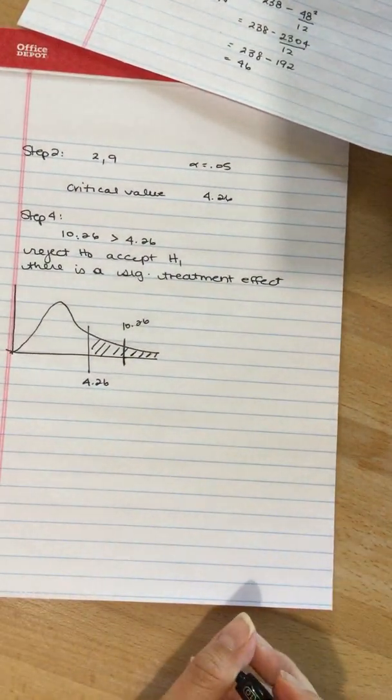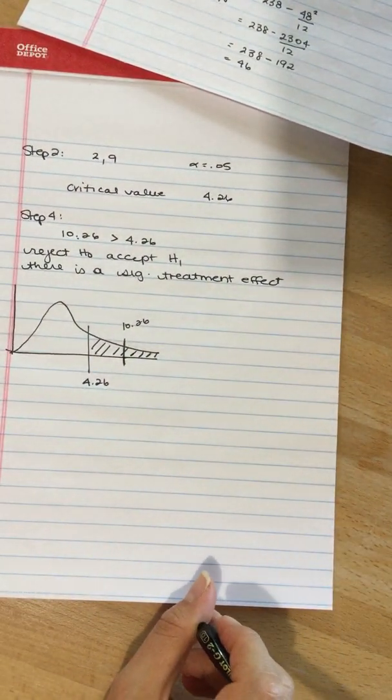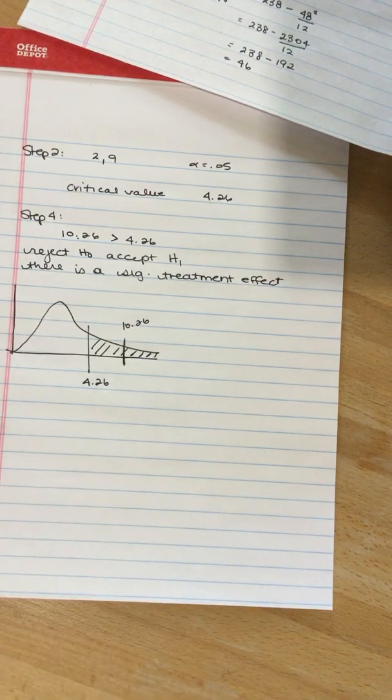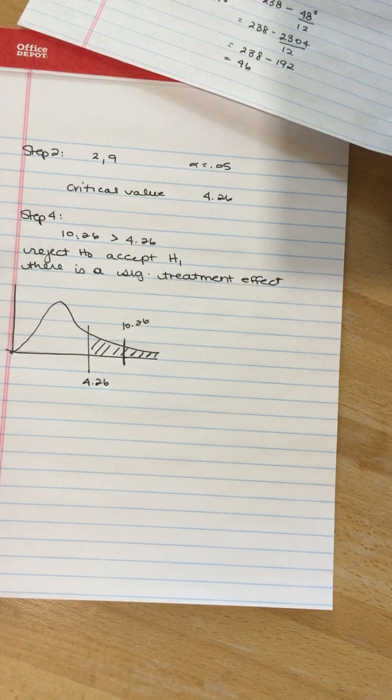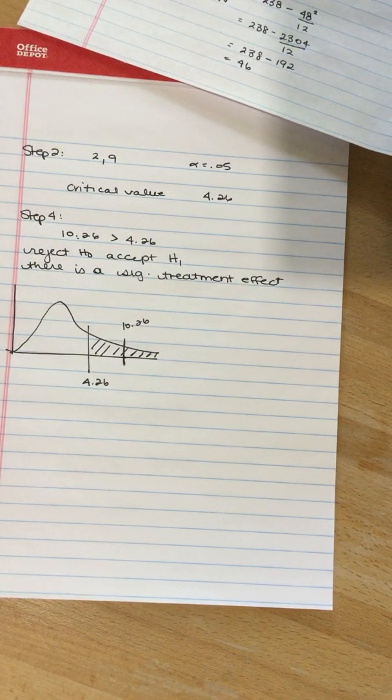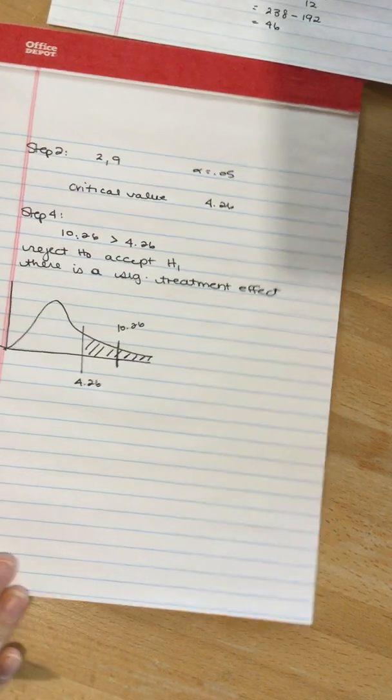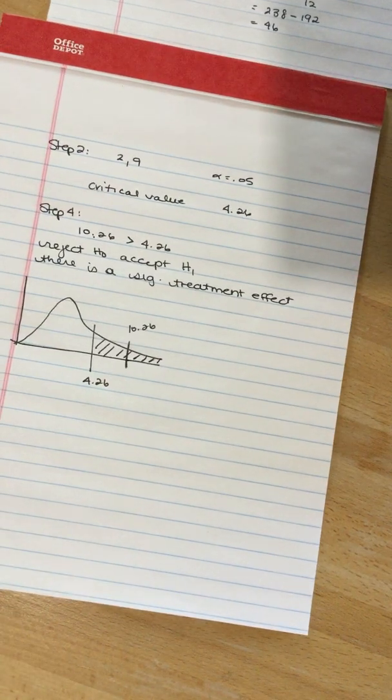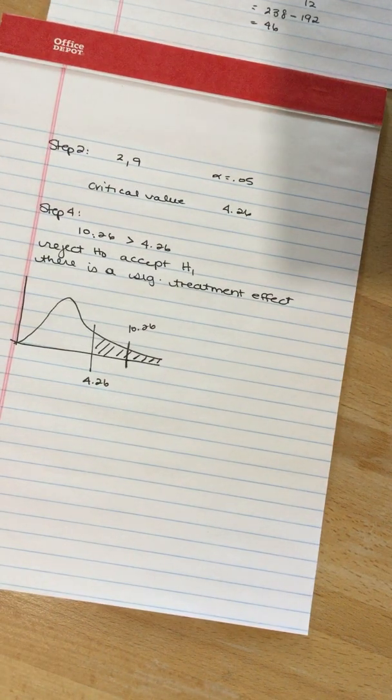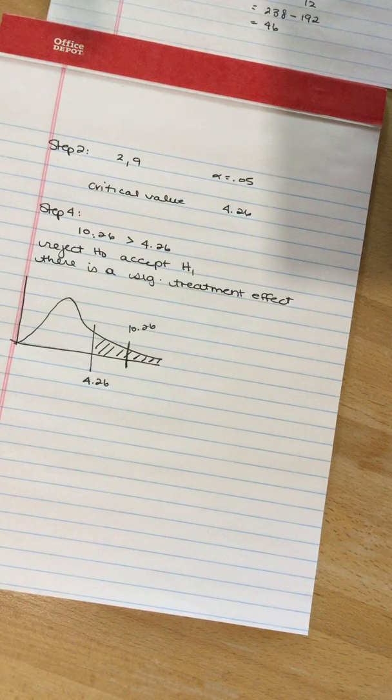What we can't tell is where that effect is. We can't tell if treatment 1 differs from treatment 2, treatment 1 differs from treatment 3, or treatment 2 differs from treatment 3. At least one of those comparisons is significant, but without post-hoc tests we can't calculate that through. We can't figure that out. We can just say that there is a difference. At least one of the means differs.